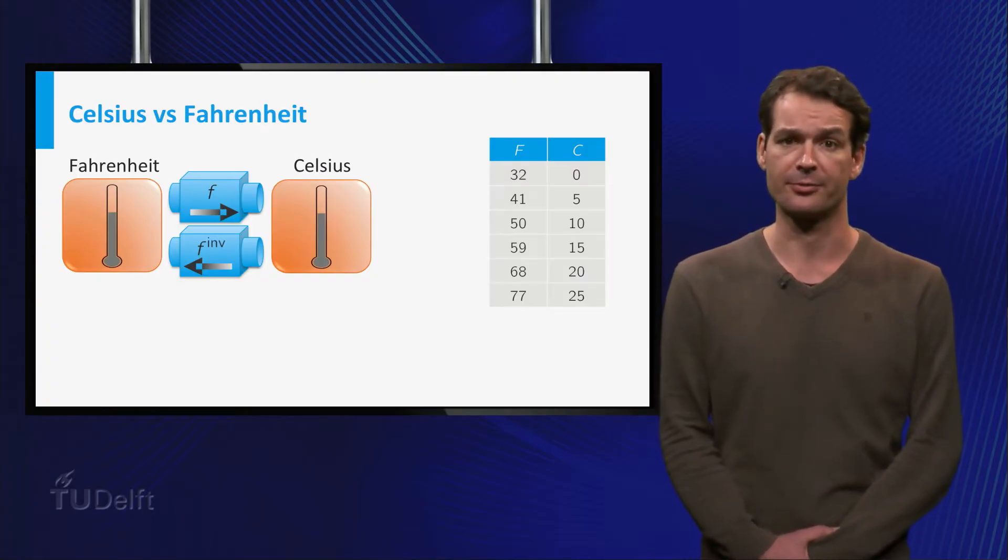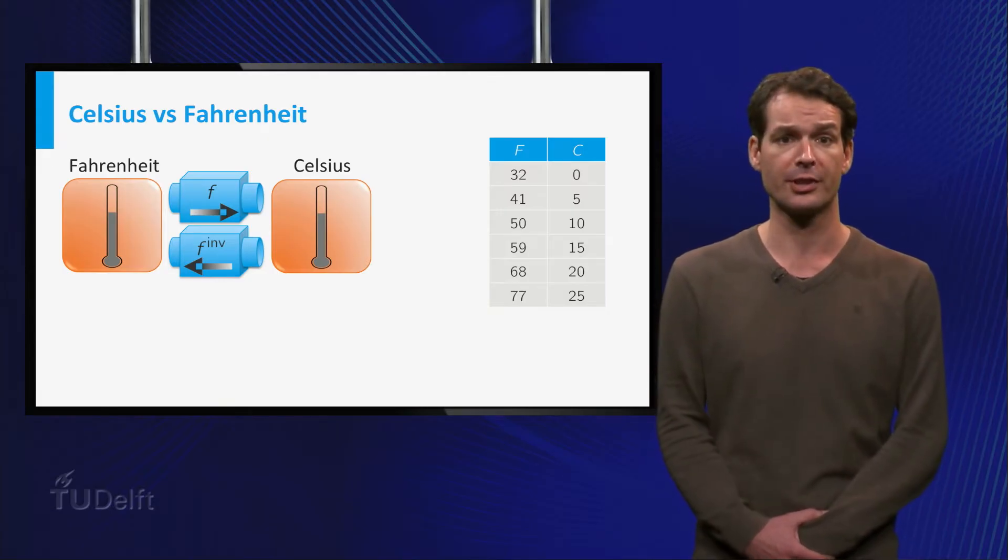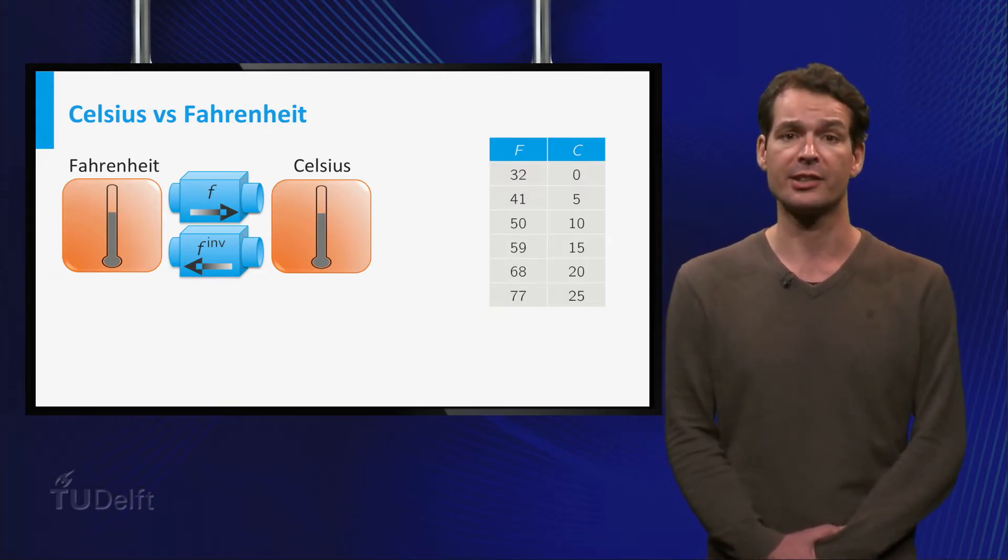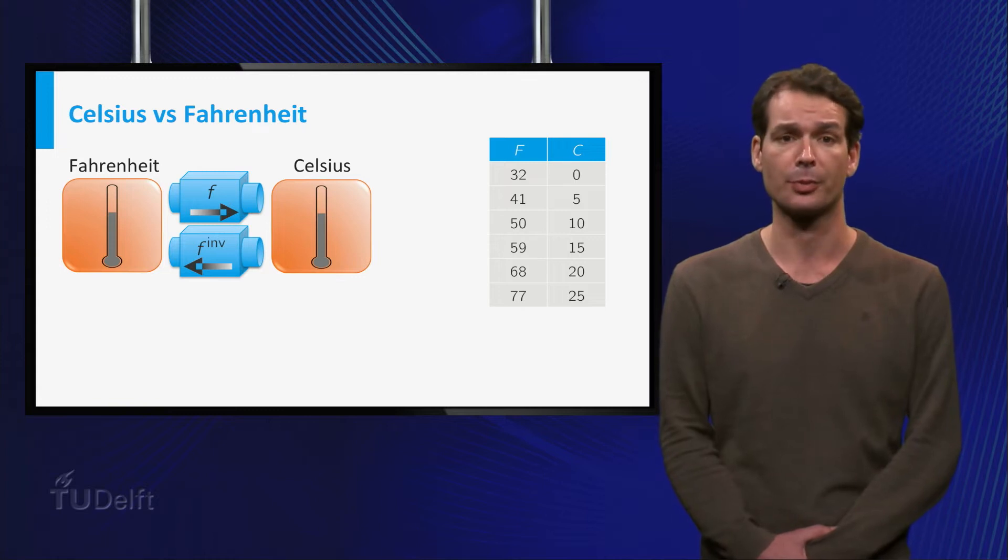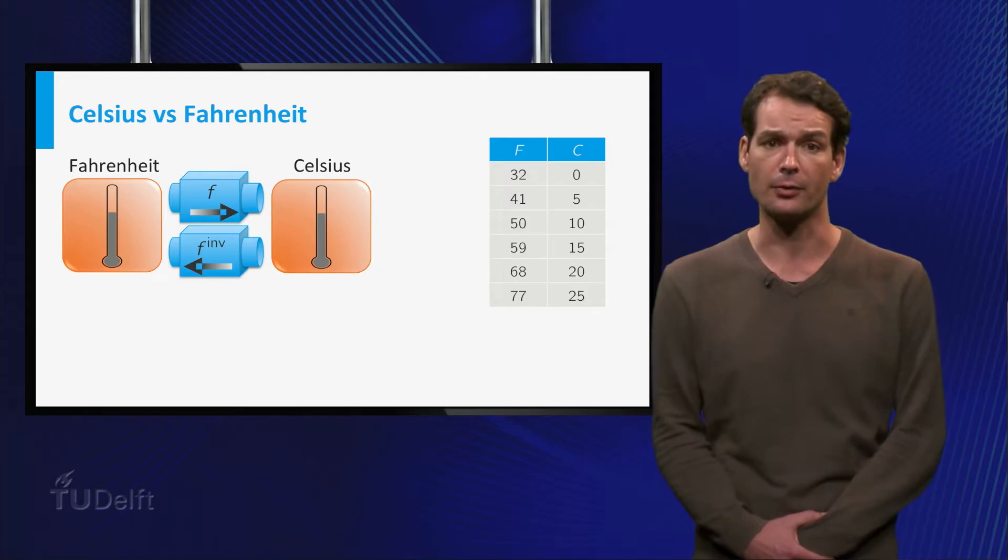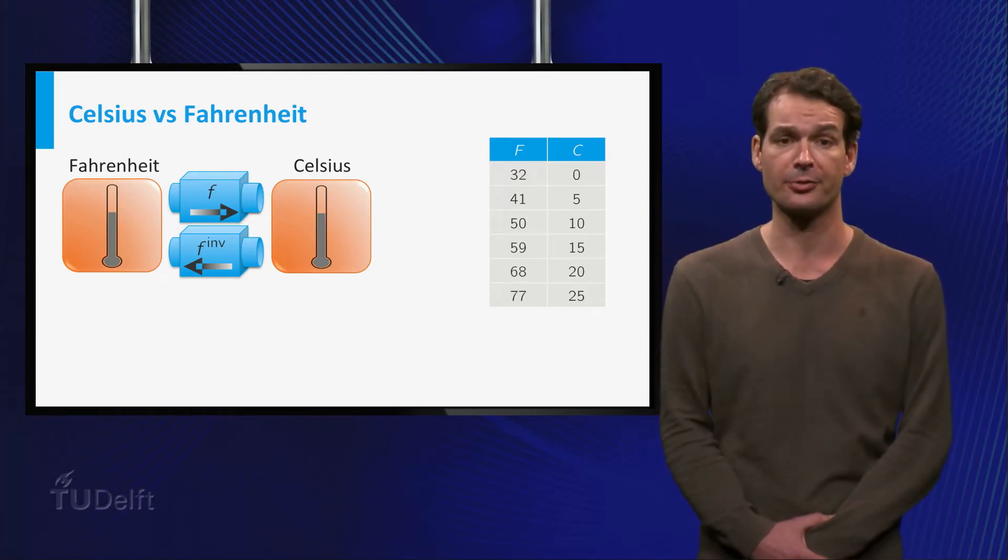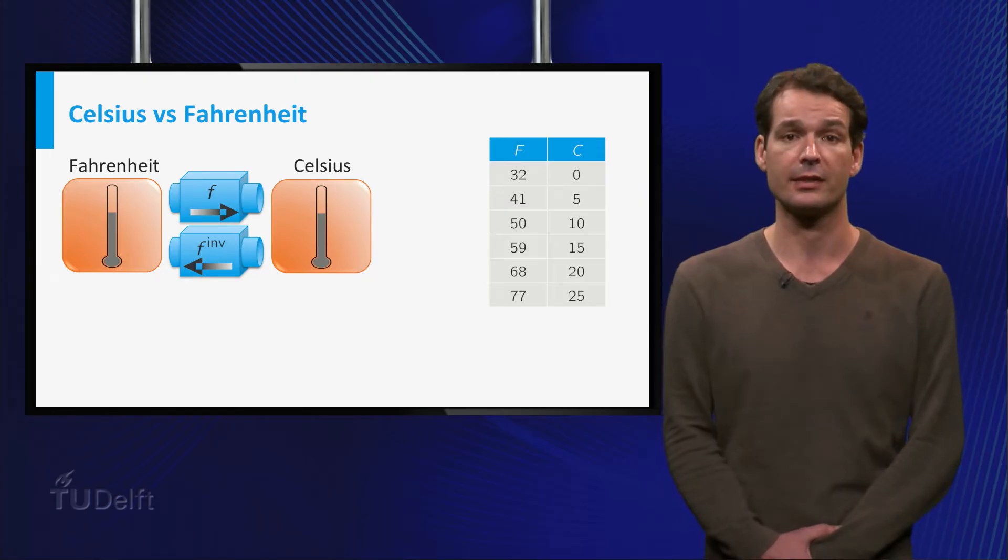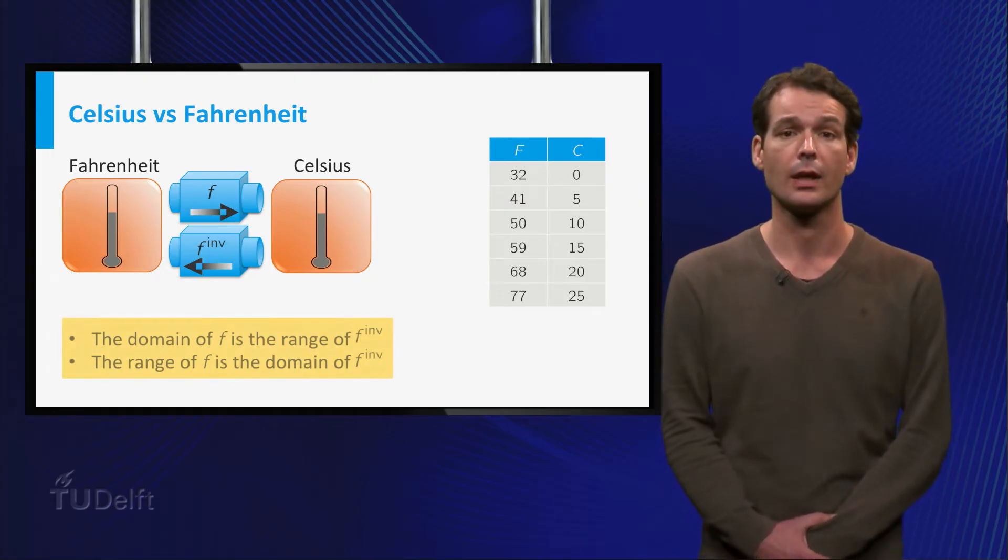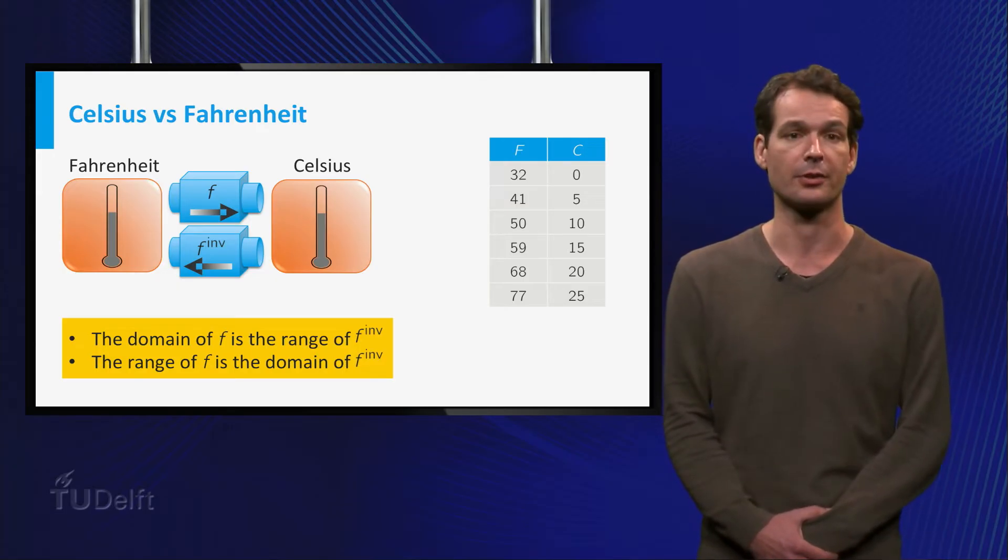Converting Fahrenheit to Celsius is a function with domain the square on the left with all possible temperatures in Fahrenheit, and the range is the square on the right with corresponding temperatures in Celsius. An American visiting Delft wants to go from right to left, that is, convert Celsius to Fahrenheit. This is the inverse function. Note that the domain of F is the range of F inverse, and the range of F is the domain of F inverse.